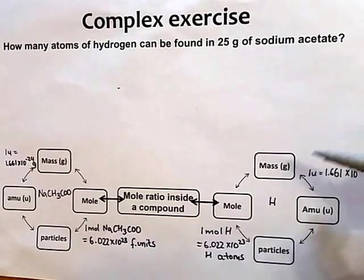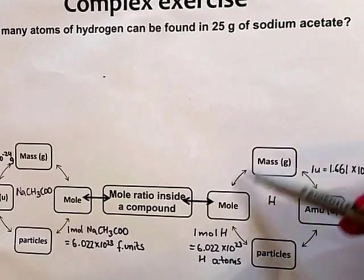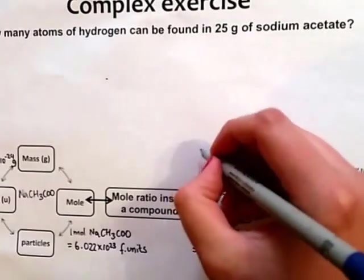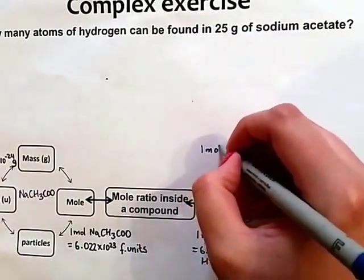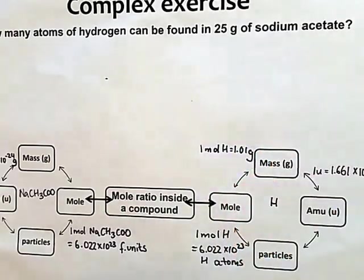Now we look specifically at hydrogen. If we look on the periodic table, we find that the molar mass of hydrogen, 1 mole of hydrogen, is equal to 1.01 grams.